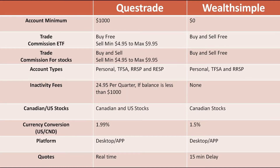If we talk about stocks, in Questrade buying and selling stock costs $4.95 minimum up to $9.95 maximum. On the Wealthsimple side, buying and selling is totally free — there is no charge for buying or selling stock, which is really helpful when you're starting out.